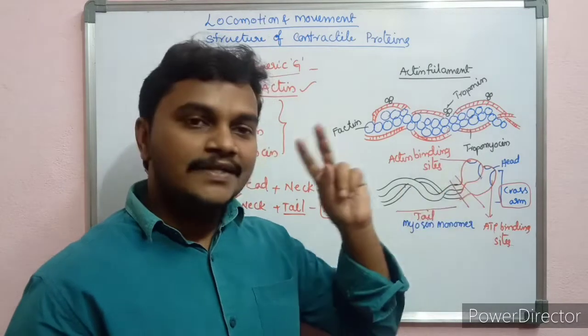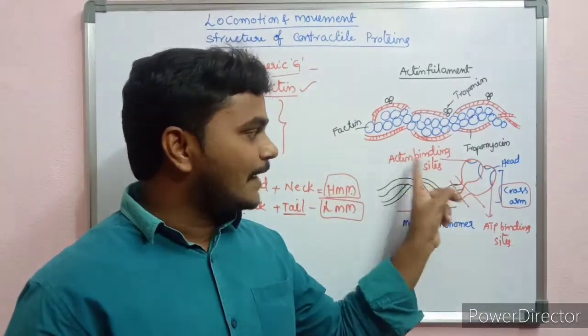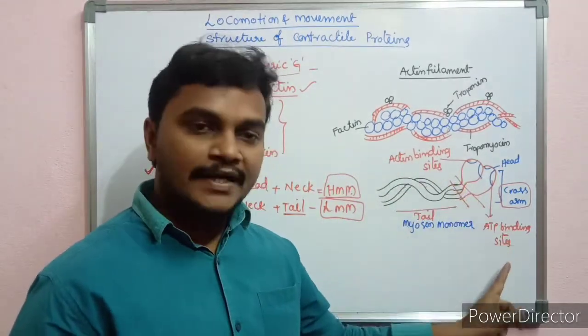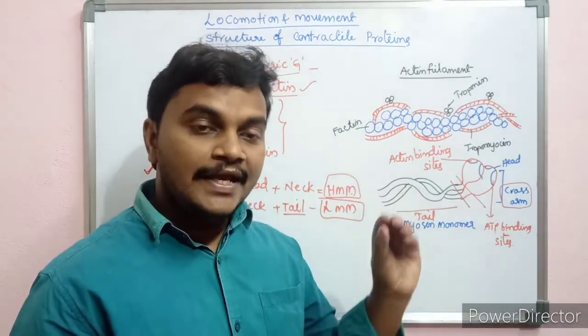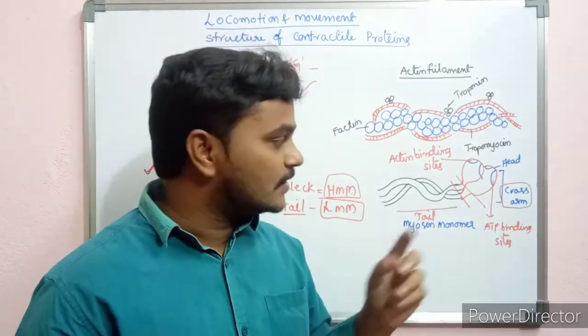The head of myosin contains two sites. One is the actin binding site and the other is the ATP binding site. The ATP binding site contains ATPase enzyme activity.